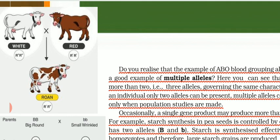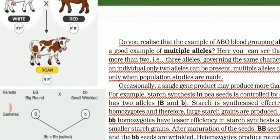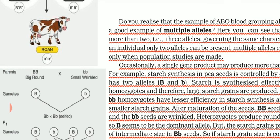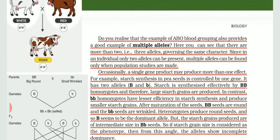It is very important: whenever the multiple allelism topic comes up, you have to give the example of the ABO blood group system.